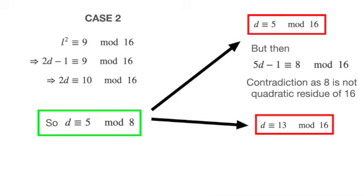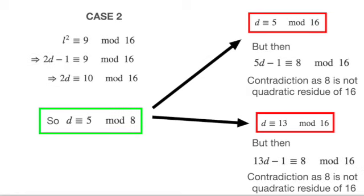If d is congruent to 5 modulo 16, 5d-1 is congruent to 8 modulo 16, but 8, as we know, is not a quadratic residue. If d is congruent to 13 modulo 16, then 13d-1 is congruent to 8 modulo 16, which is again not a quadratic residue, as we have seen before.